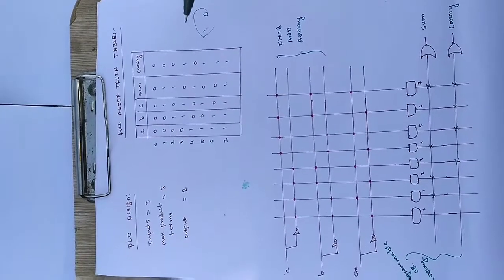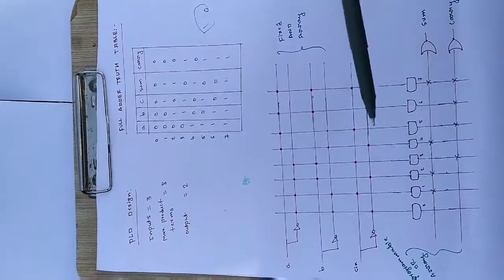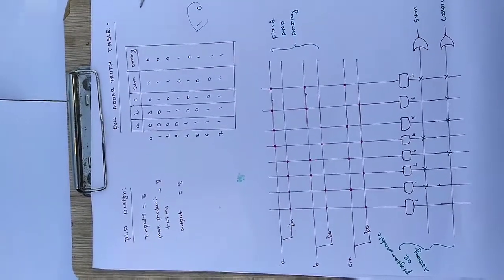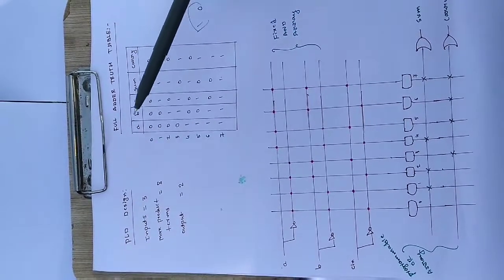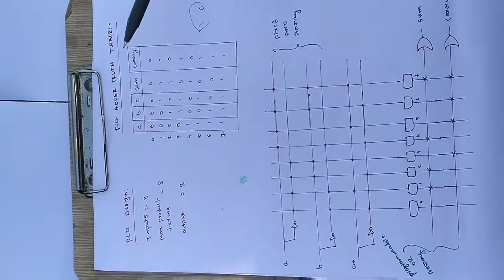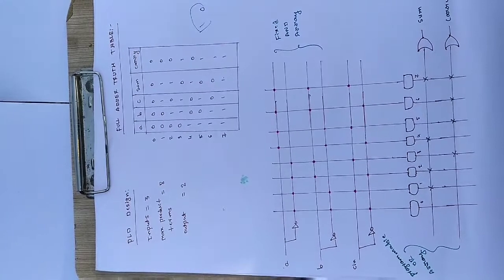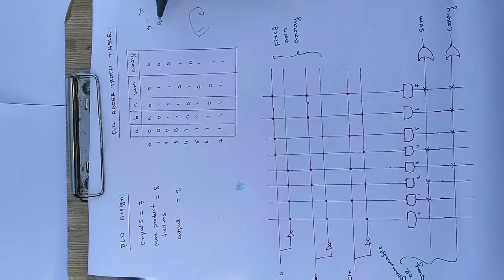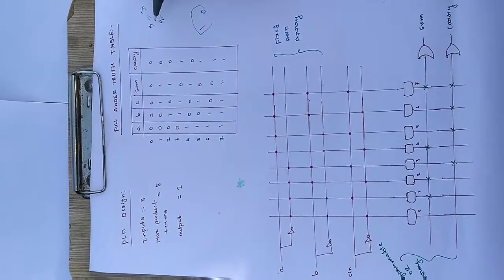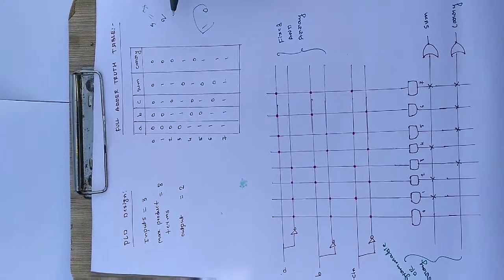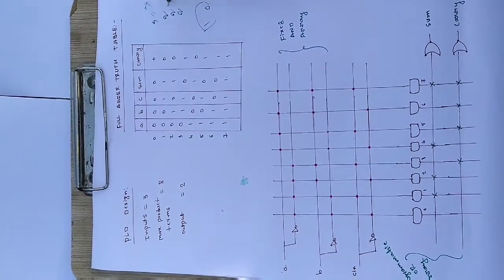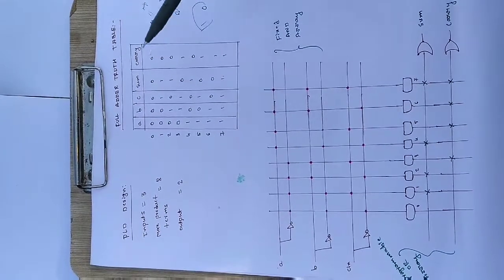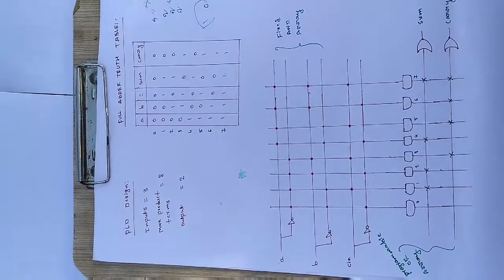The actual PLD design has three inputs: A, B, and C. The maximum product terms possible with three inputs is 8, calculated by the formula 2 to the power of the number of inputs — so 2³ = 8. If you had only two inputs A and B, it would be 2² = 4 maximum product terms. The outputs are Sum and Carry, so output count equals 2.